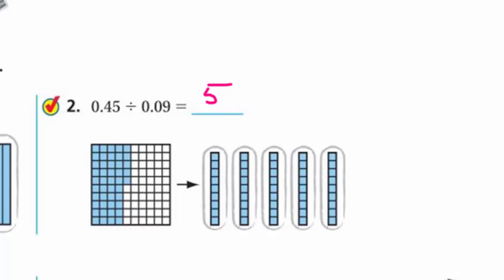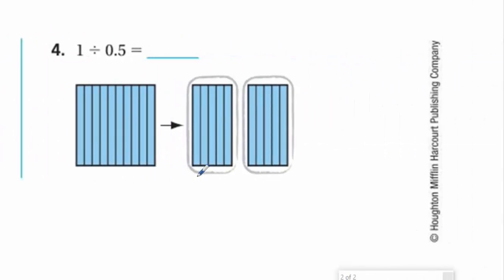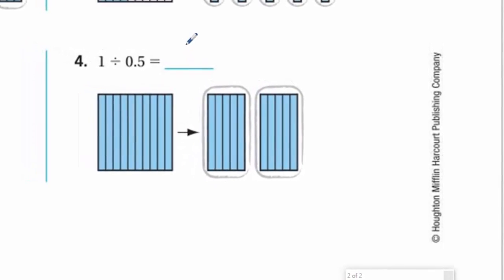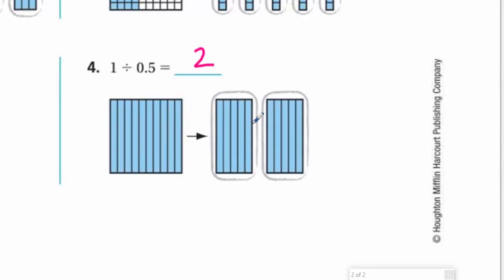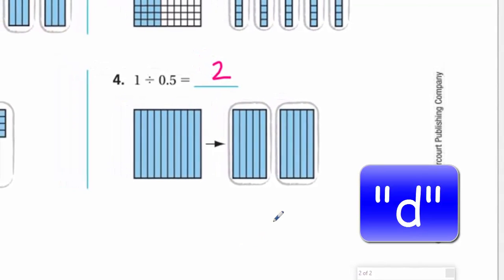Coming down to number three: ninety-six hundredths divided by twenty-four hundredths. We're putting twenty-four hundredths in each group, and how many groups we were able to make? That would be four — which is ninety-six divided by twenty-four. And then over here, we have one whole and now we're going to put five-tenths in each group — a half and a half — it's going to just be two. You're taking one whole and dividing it by point-five, giving us two of those halves.